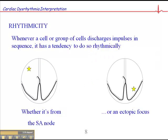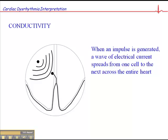Rhythmicity is another important principle. Whenever a single cell or group of cells discharges impulses in sequence, it has a tendency to do so rhythmically. So whether it's from the SA node or a single ectopic focus, if it fires in sequence, it has a tendency to do so rhythmically. This will help guide us when we're looking at distinguishing one dysrhythmia from another later on in the book.